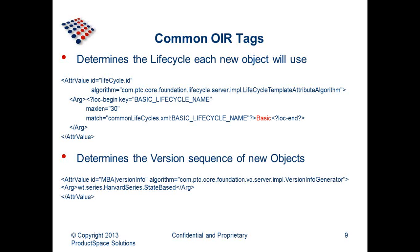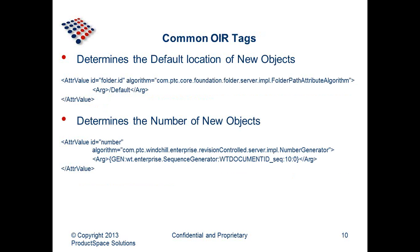Another thing you might see is a version sequence. By default you'll see the Harvard series. We've added state-based, so there is a loaded sequence in the database broken out into sections. Depending on how your lifecycle is determined, you can set it to use a state-based version sequence. Another one is default location. In your OIRs you'll have slash-default as the default location of all objects. If you want all new CAD objects or documents to default to a specific folder, you can set that here in the OIR and it will automatically be set there by default.